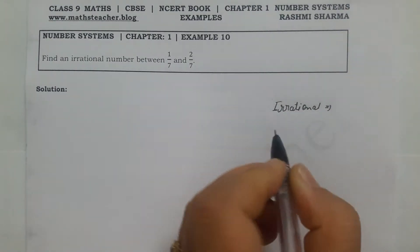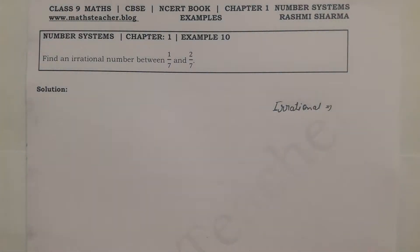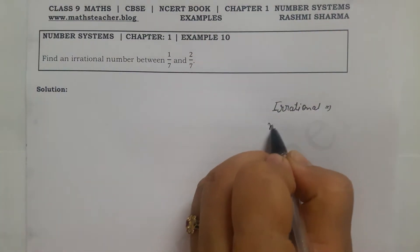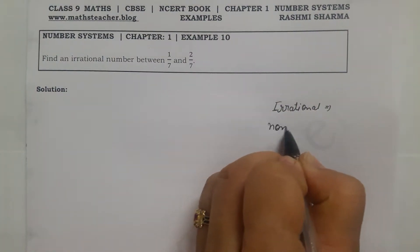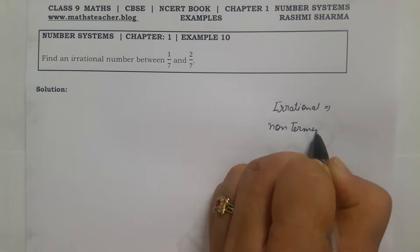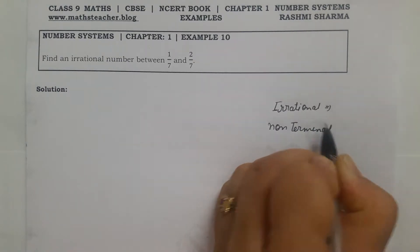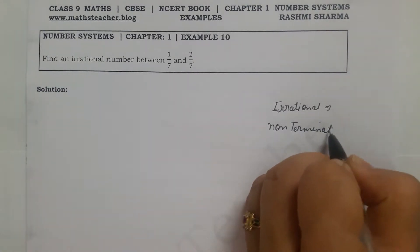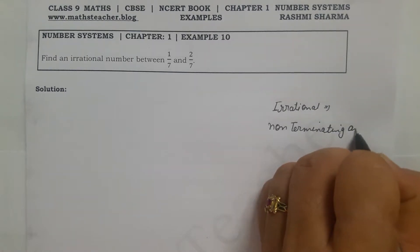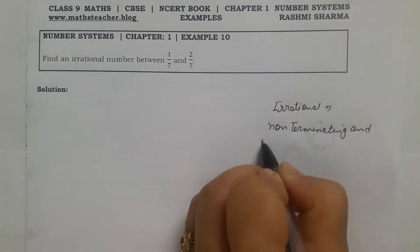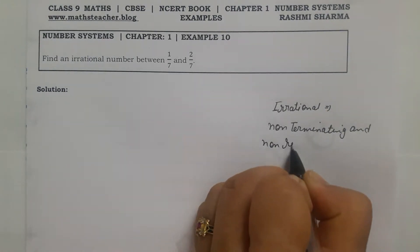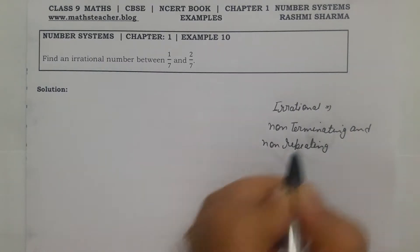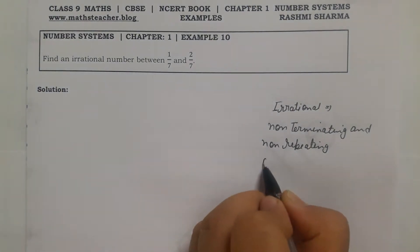The decimal expansion of an irrational number is non-terminating and non-repeating. So our irrational number decimal expansion is non-terminating and non-repeating. If you don't understand this, I have written here decimal expansion to explain it.